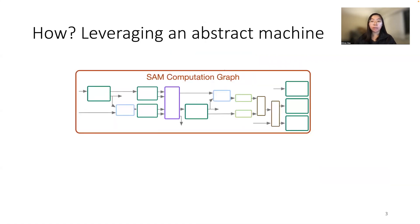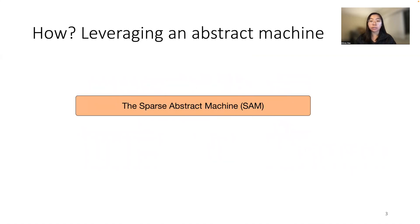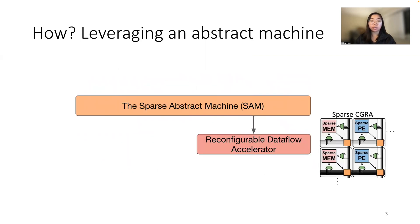So how exactly were we able to do this? We leveraged a pre-existing abstract machine for our target domain, the domain of sparse tensor algebra. Here I show the sparse abstract machine, or SAM, graph. SAM represents sparse tensor algebra as streams, analogous to data flowing on wires, and primitives, analogous to hardware modules. Our CGRA hardware accelerator implements the stream and primitive protocols of SAM.